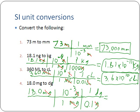Doing that, we end up getting 0.18 from our calculator. Now, we want to watch out — I just put 0.18, which only has two significant figures, but our original number 18.0 had three. So this actually needs to have three significant figures: 0.180 decigrams. That's our final answer.